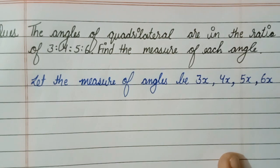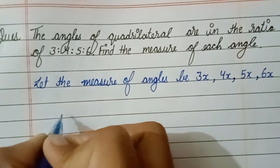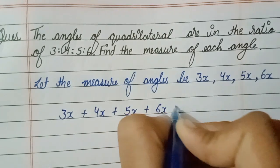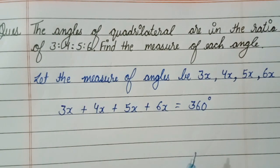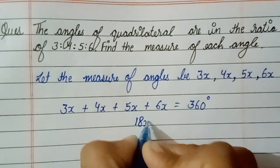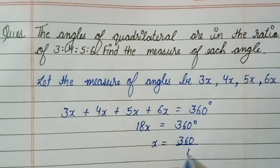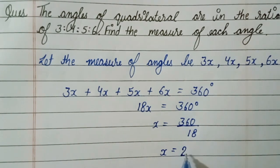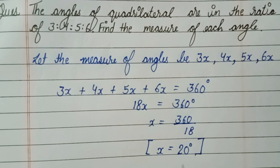These are the angles of the quadrilateral, and we know that the sum of angles of a quadrilateral is equal to 360 degrees. So we write: 3x plus 4x plus 5x plus 6x equals 360 degrees. Adding these, we get 18x equals 360 degrees, then x equals 360 divided by 18, which gives us x equals 20 degrees.